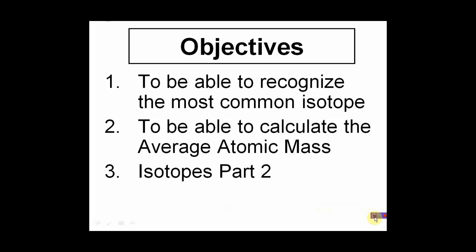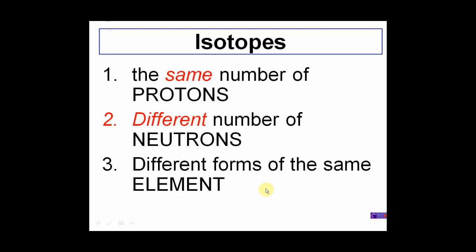I also call this isotopes part 2, so if you're just tuning in for the first time, there was an isotope lesson prior to this. Just a little review: what are isotopes? Isotopes have the same number of protons but they differ in the number of neutrons. A different number of neutrons gives a different mass number, which is a combination of protons and neutrons. Basically, we have two or more different forms of the same exact element.